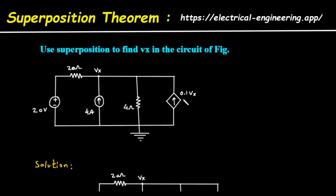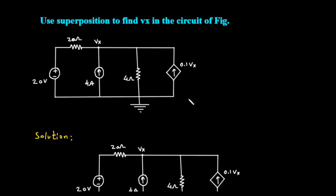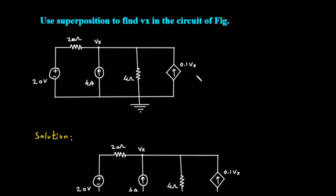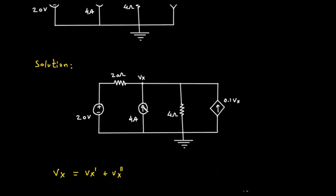Finally, on the right side, we have a dependent current source, also with its arrow pointing upwards. Its value is dependent on the voltage Vx, and is given as 0.1 times Vx. The bottom wire of the entire circuit is connected to ground.